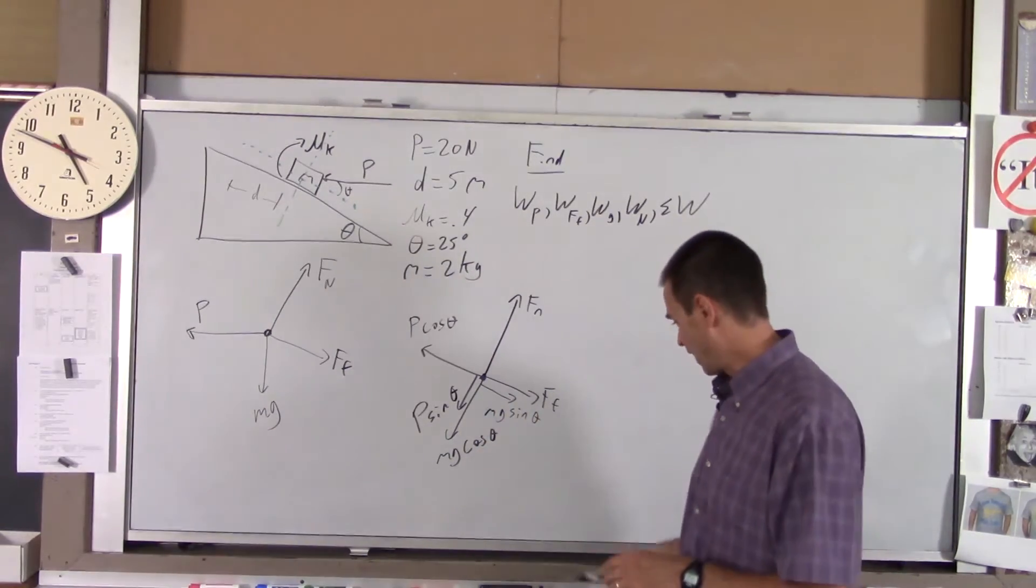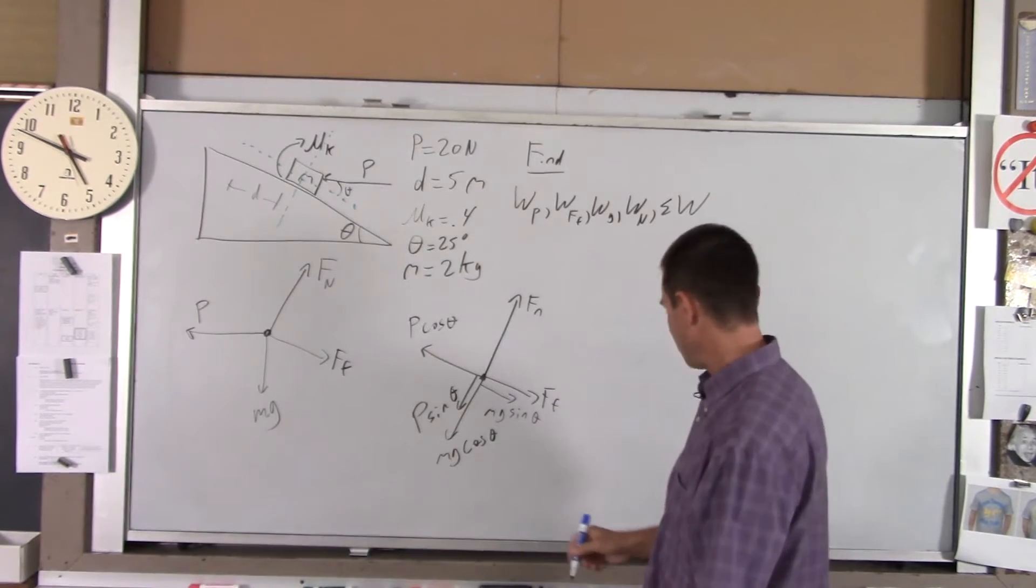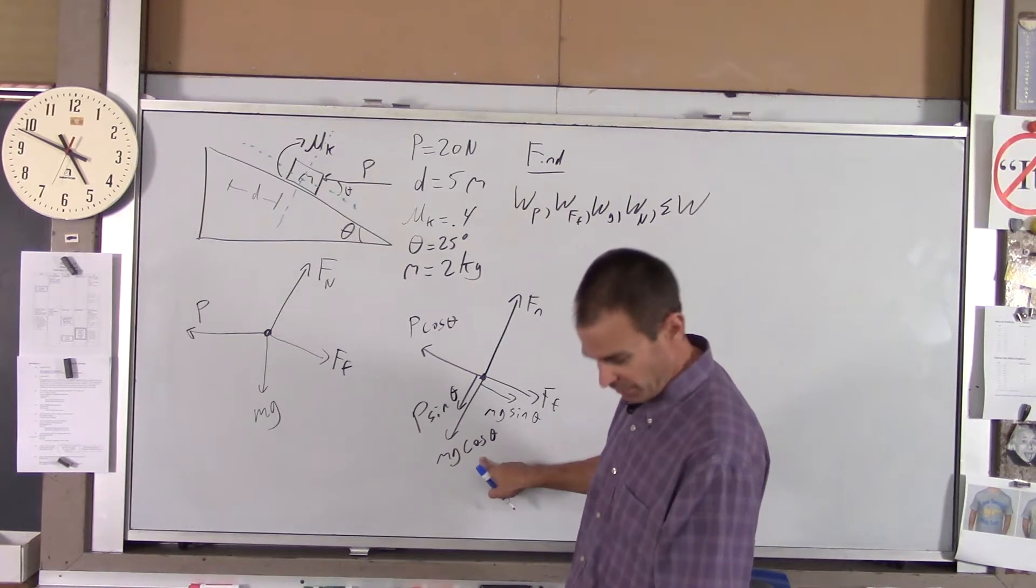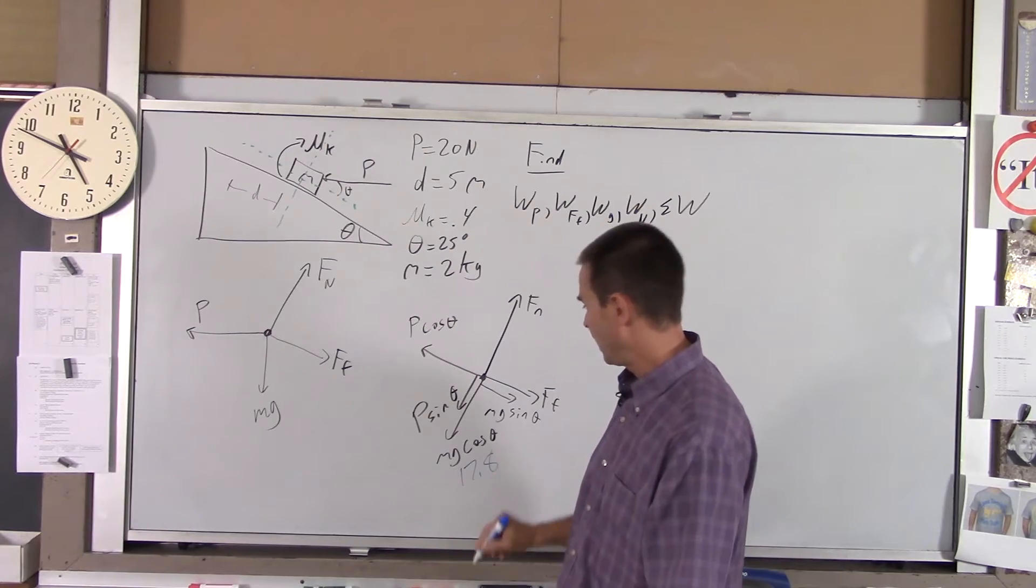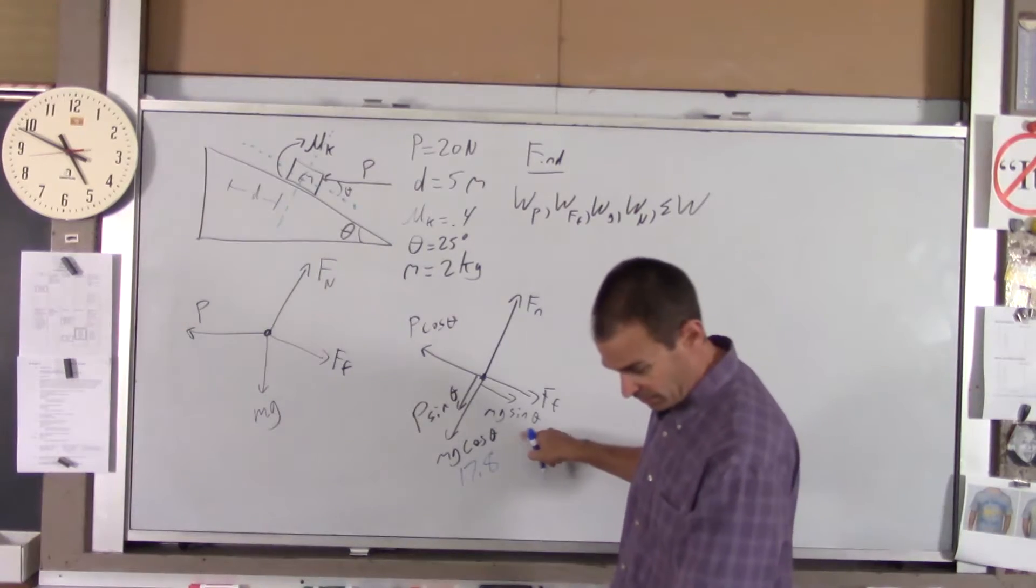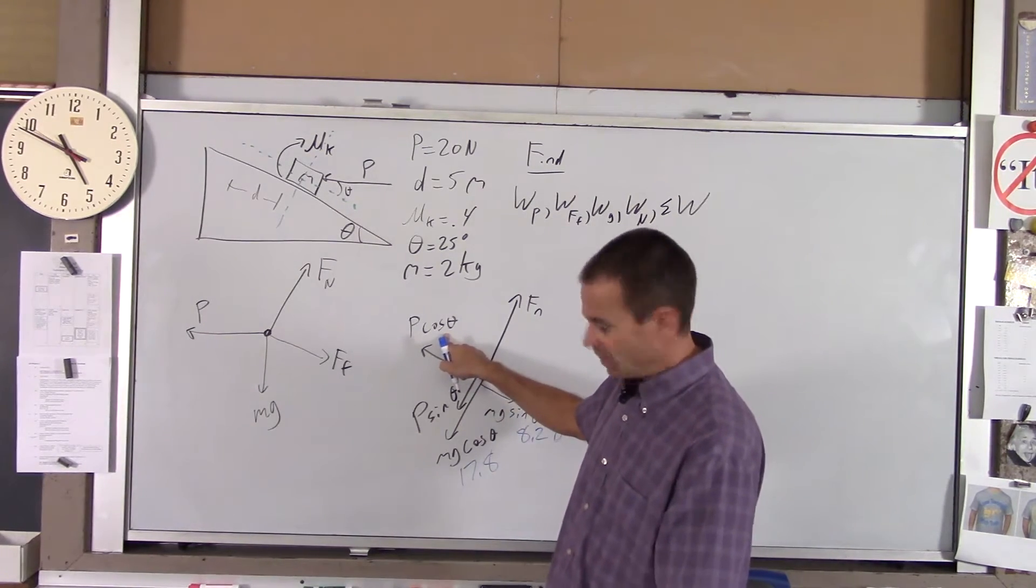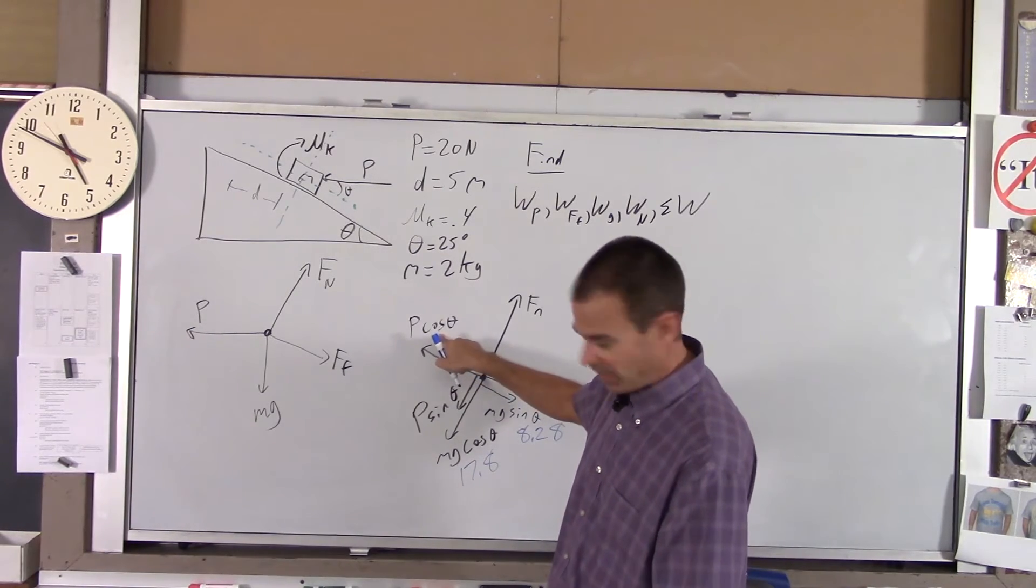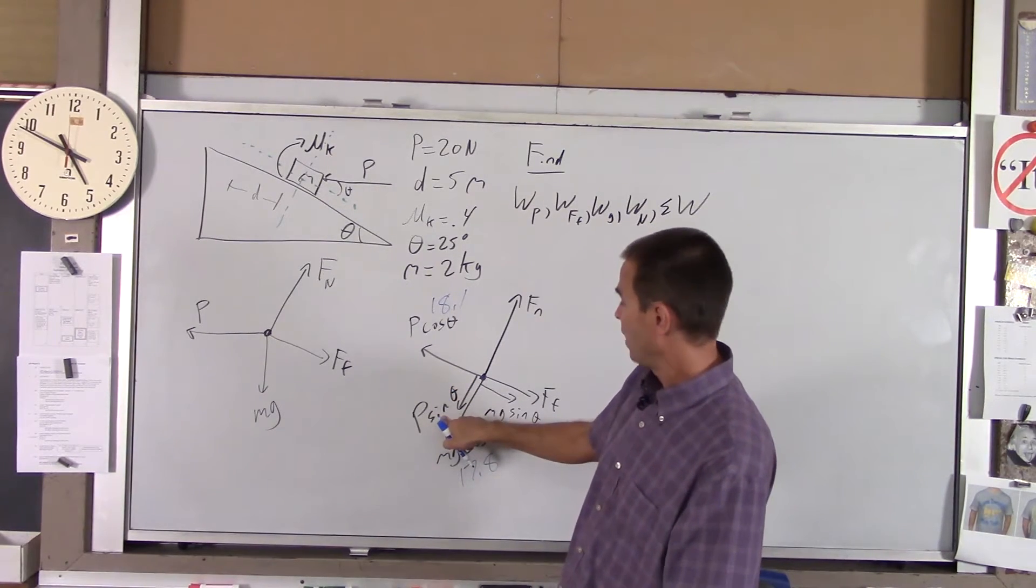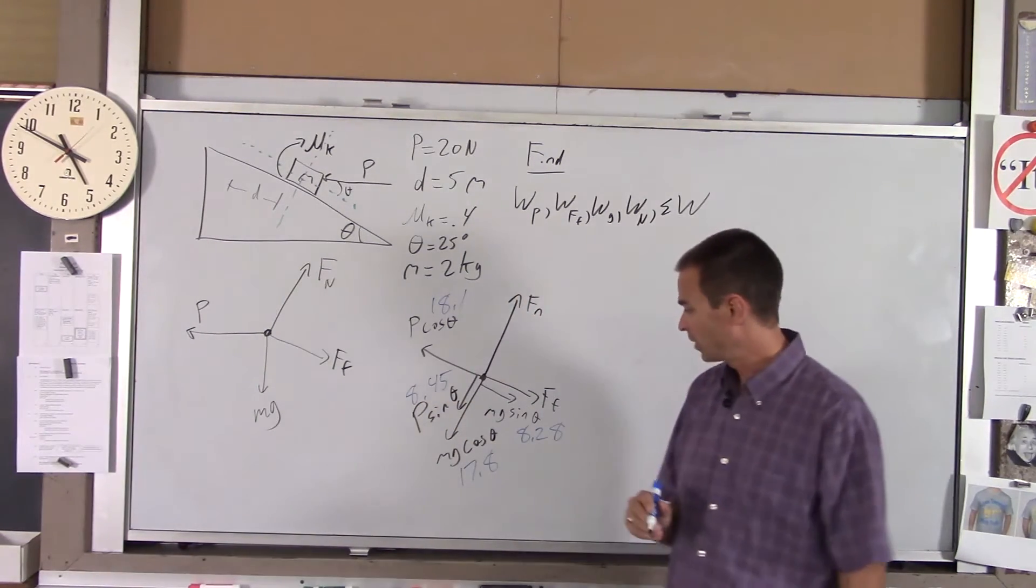You got to have your good skill set on drawing FBDs before you can approach this problem. Now we can find numbers for all these forces. First force: mg cosine theta is 2 times 9.8 times cosine 25, you get 17.8. mg sine theta, that's 2 times 9.8 times sine of 25, you get 8.8. P cosine theta, if you do 20 times cosine 25, you get 18.1. For P sine of theta, you just do 20 times sine of 25 and you get 8.45.